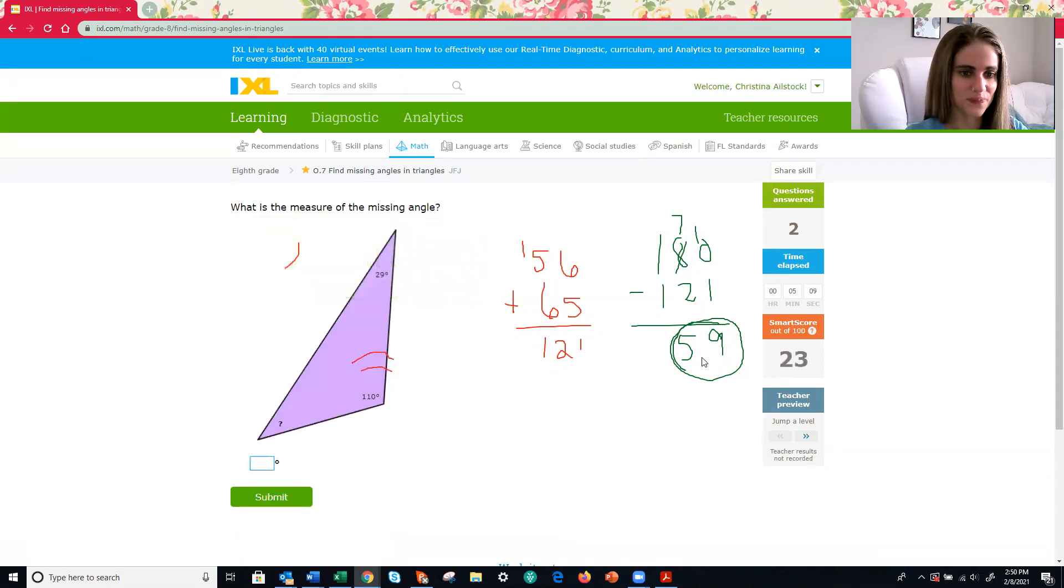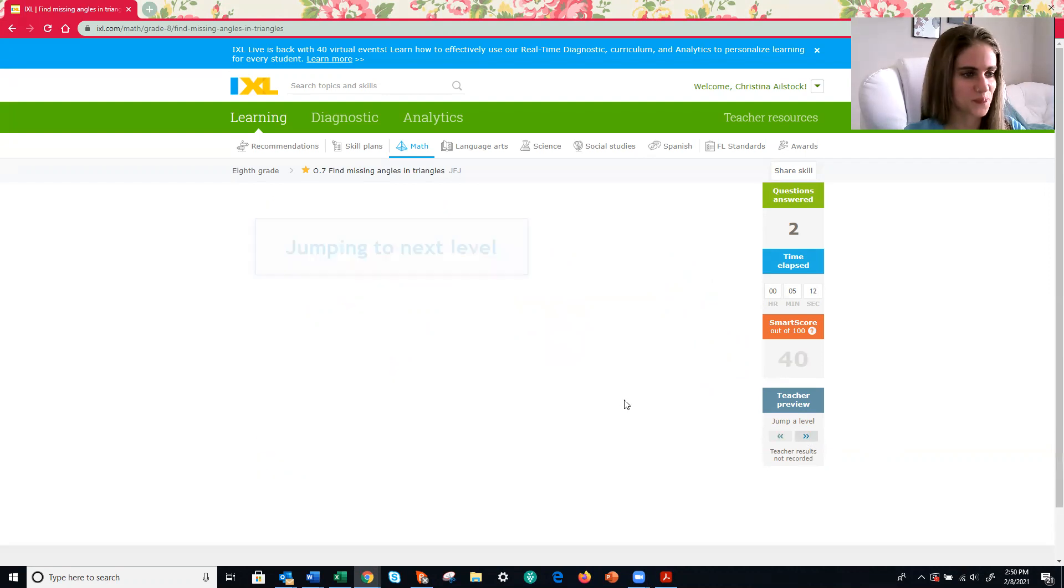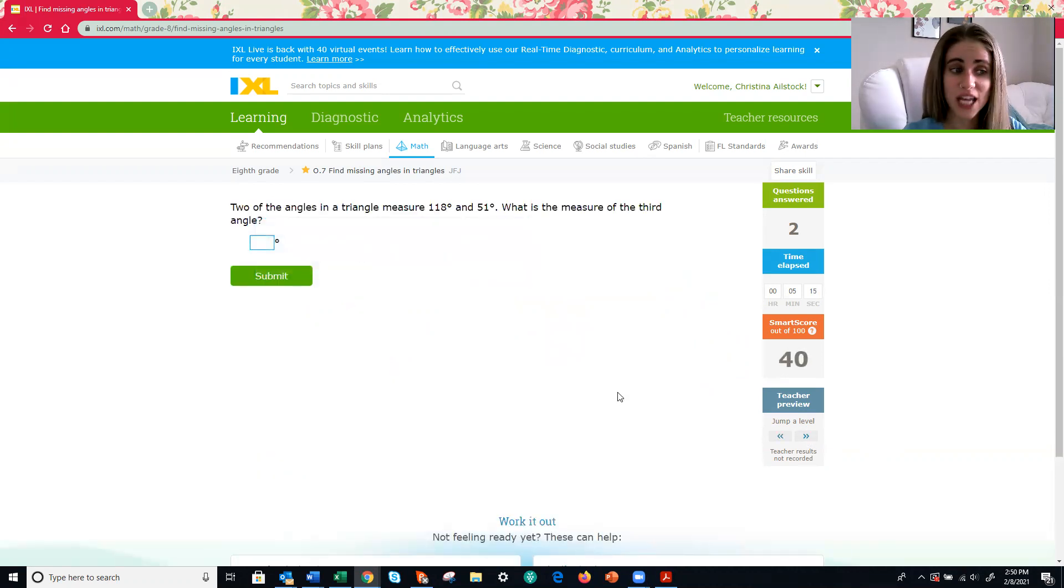Bravo. All right, let's jump up to a harder level. Same thing. I just no longer have the picture. Two angles in a triangle measure 118 and 51 degrees. What is the measure of the third angle? No picture, but you could draw one. Or if you don't need one, then just go ahead and solve it. We need to add the two that we have. 118 plus 51. And then what are we going to subtract from again? 180. A triangle always adds up to 180.